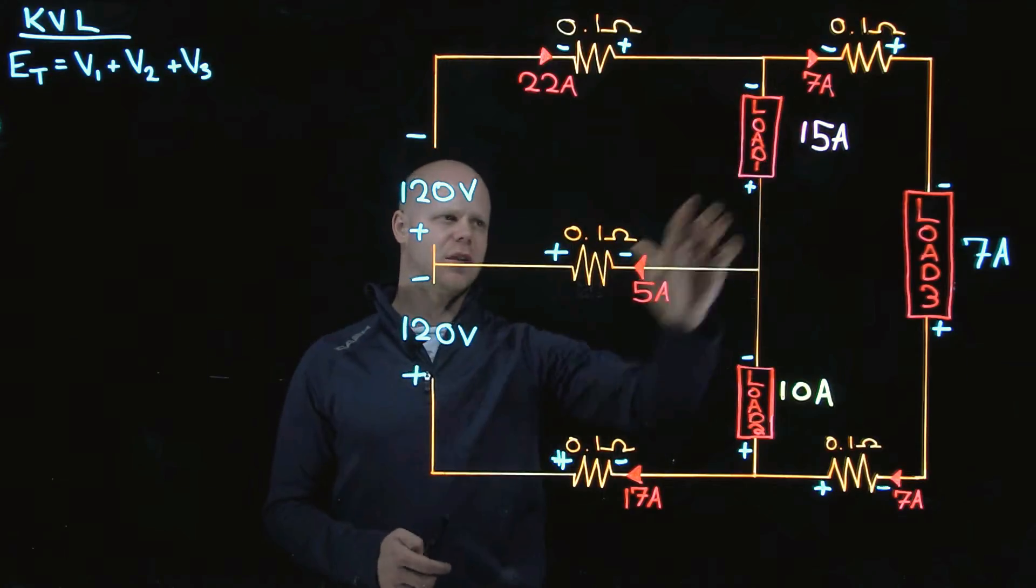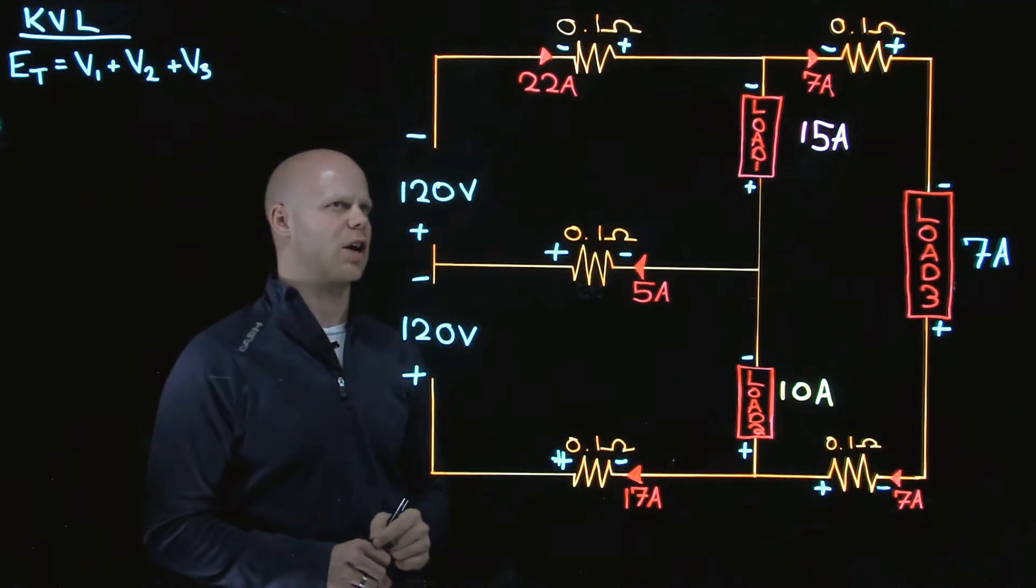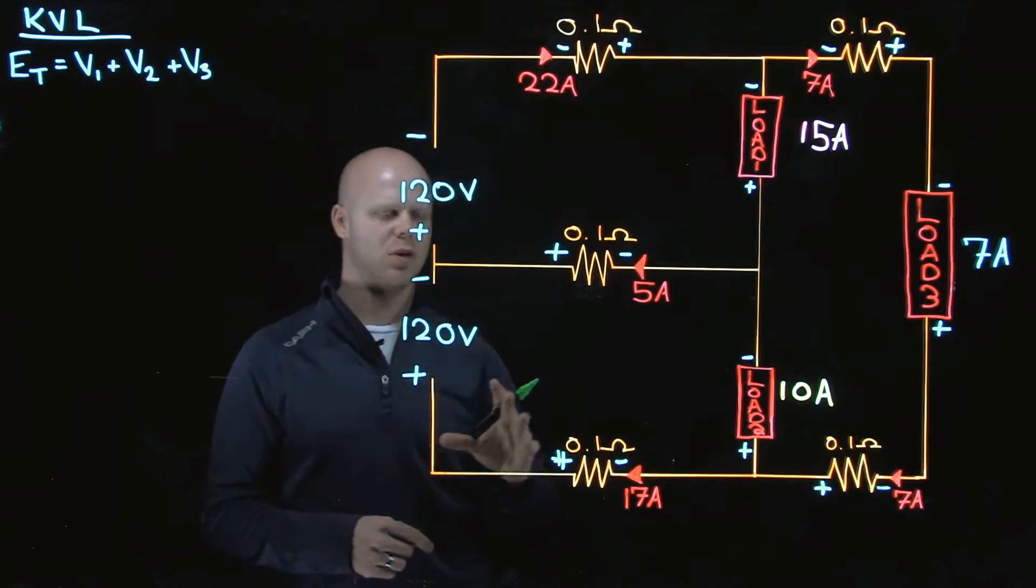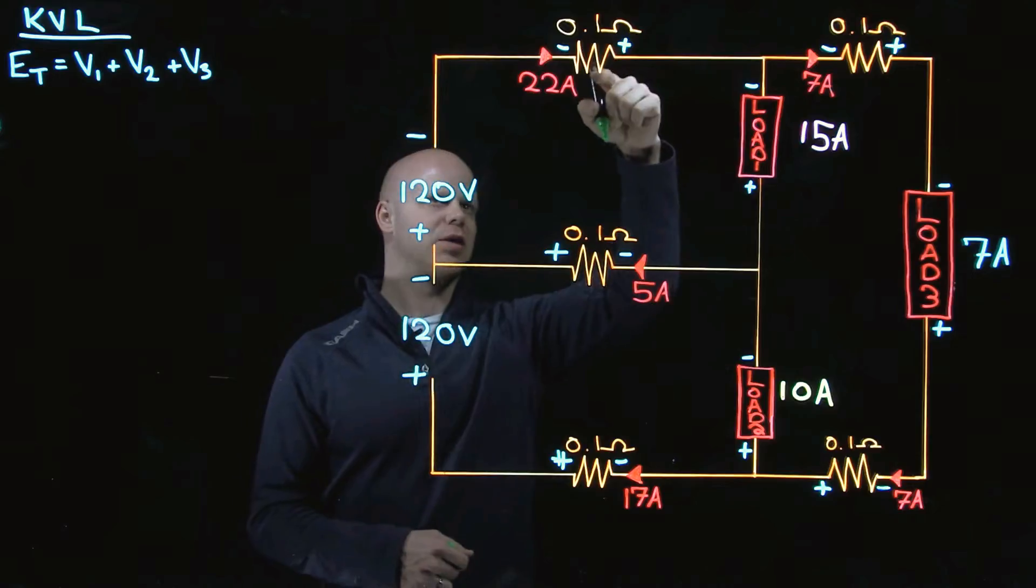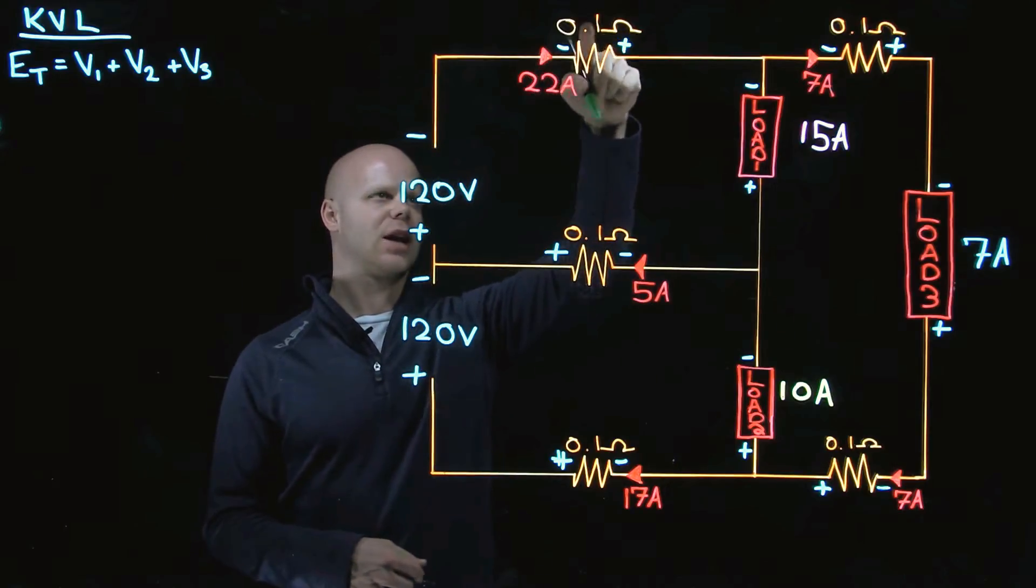So if I'm going to solve and calculate what some of these voltage drops are going to be, I'm going to need to transpose Ohm's law formula to figure out what voltage is.